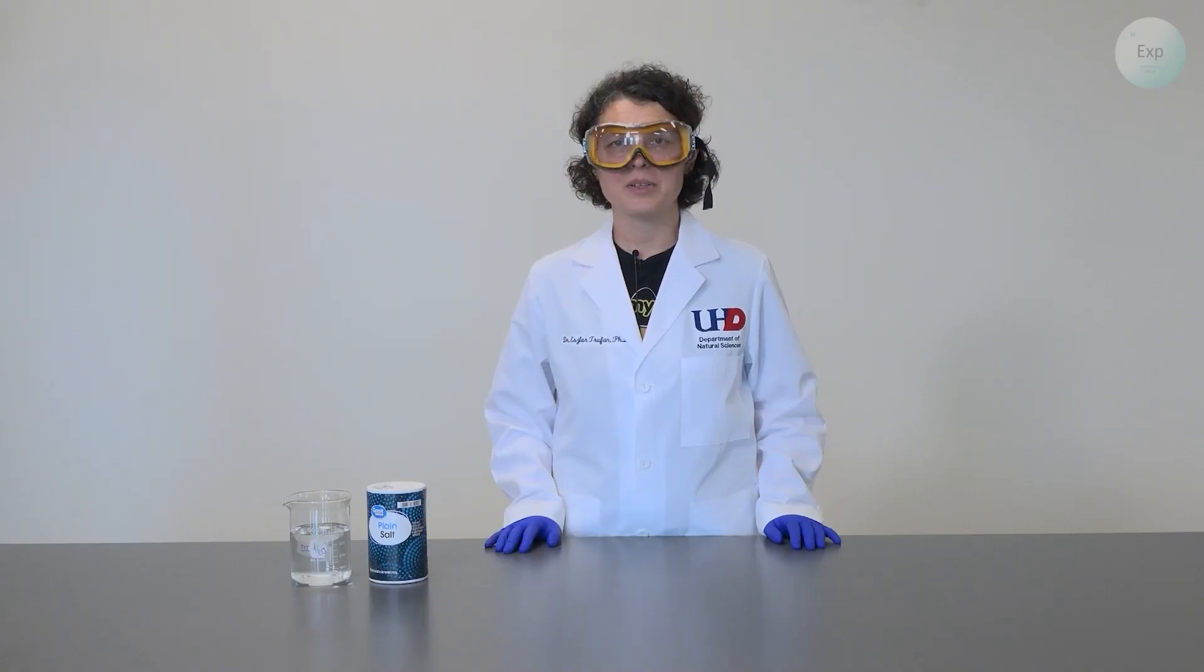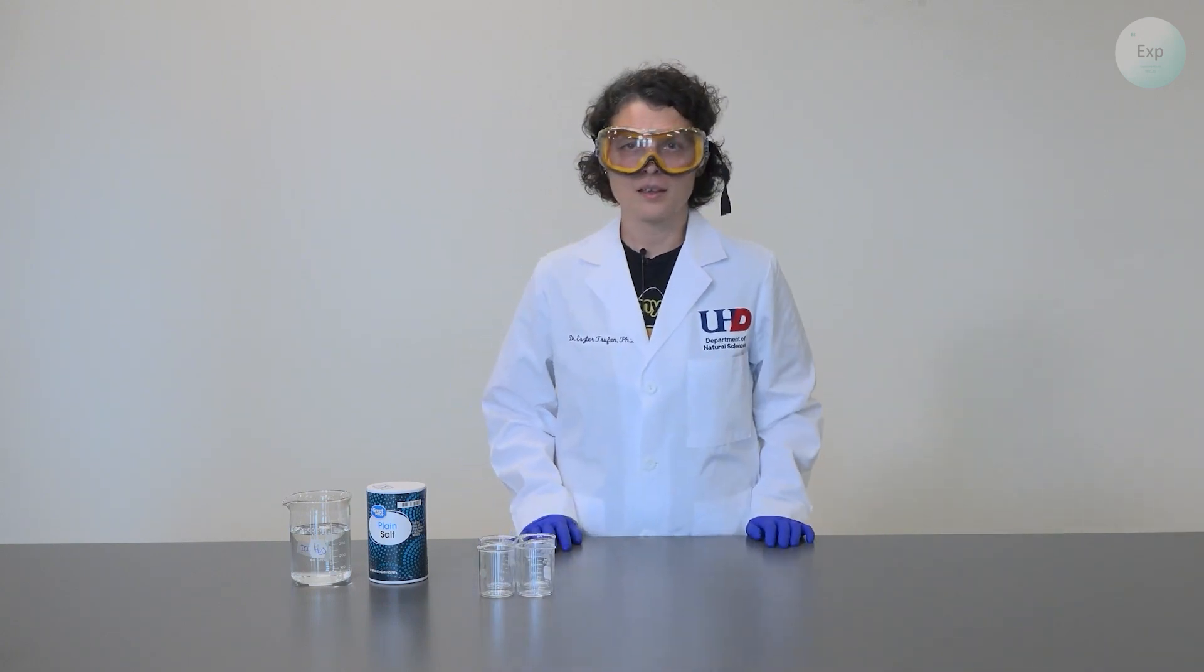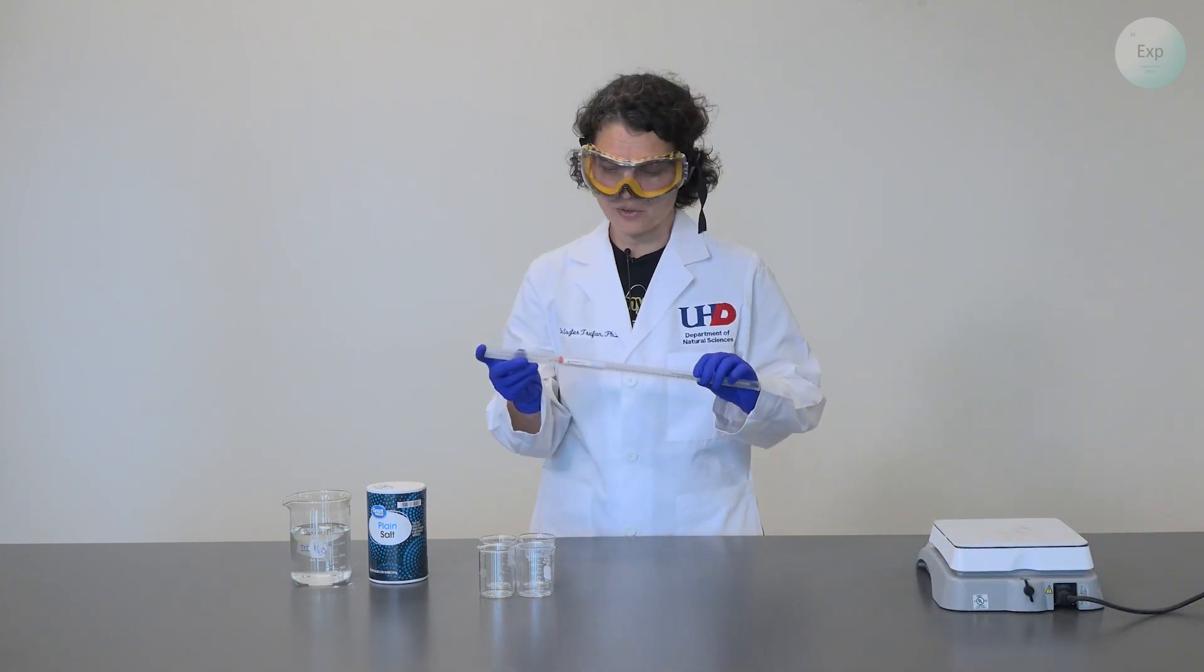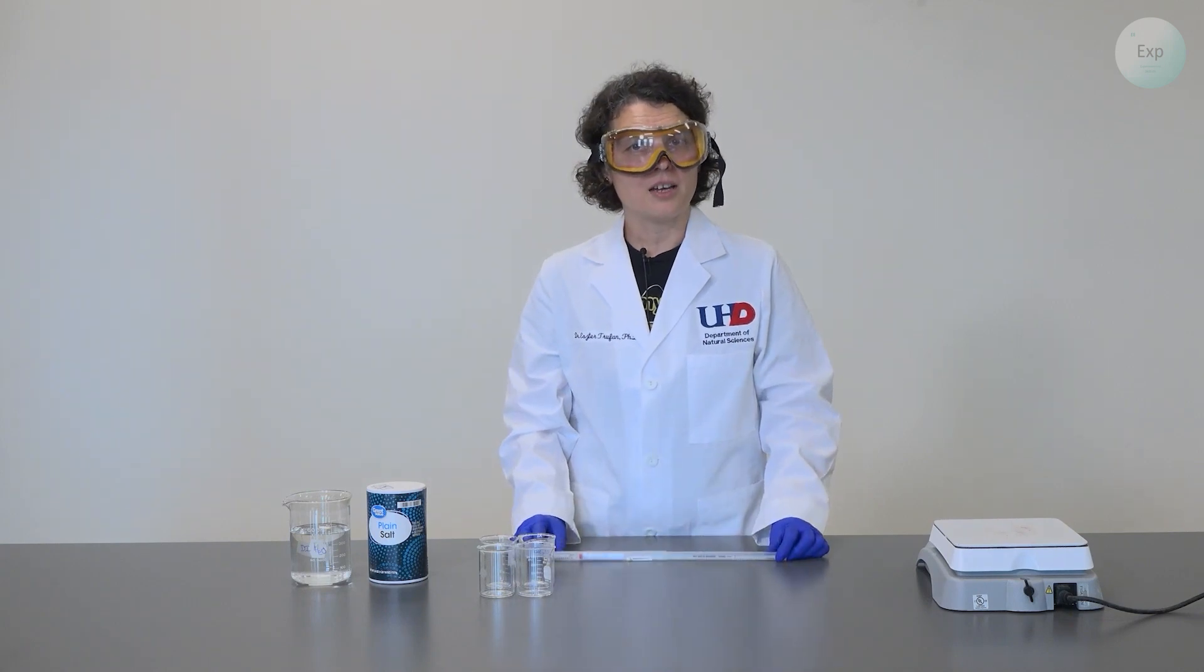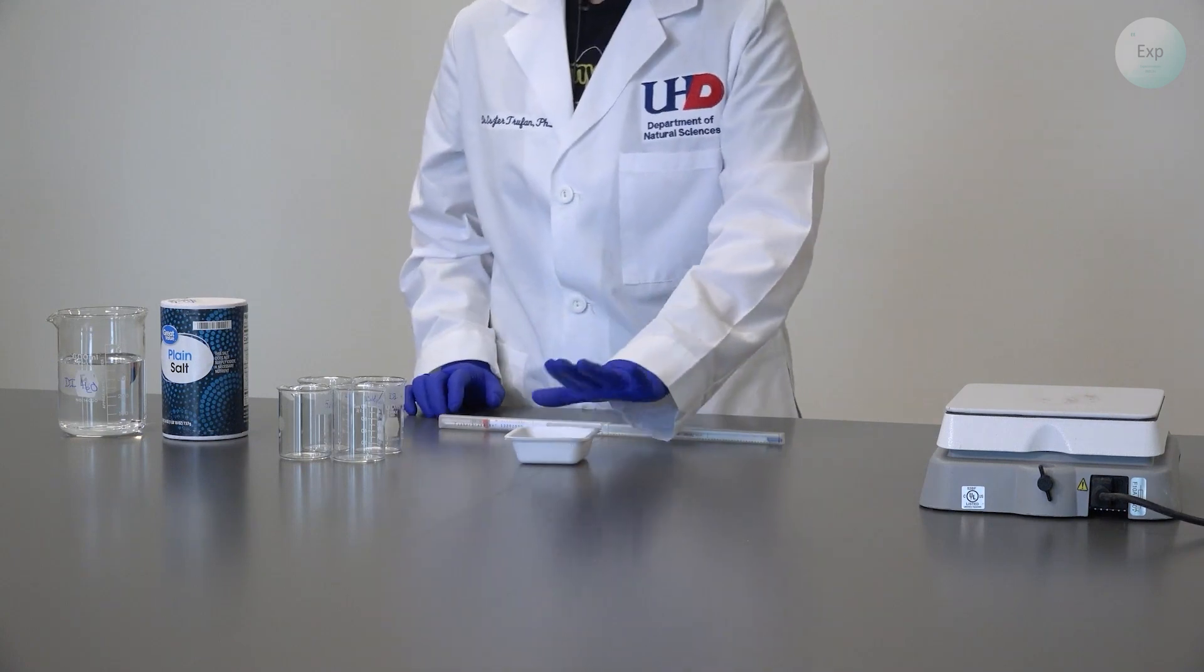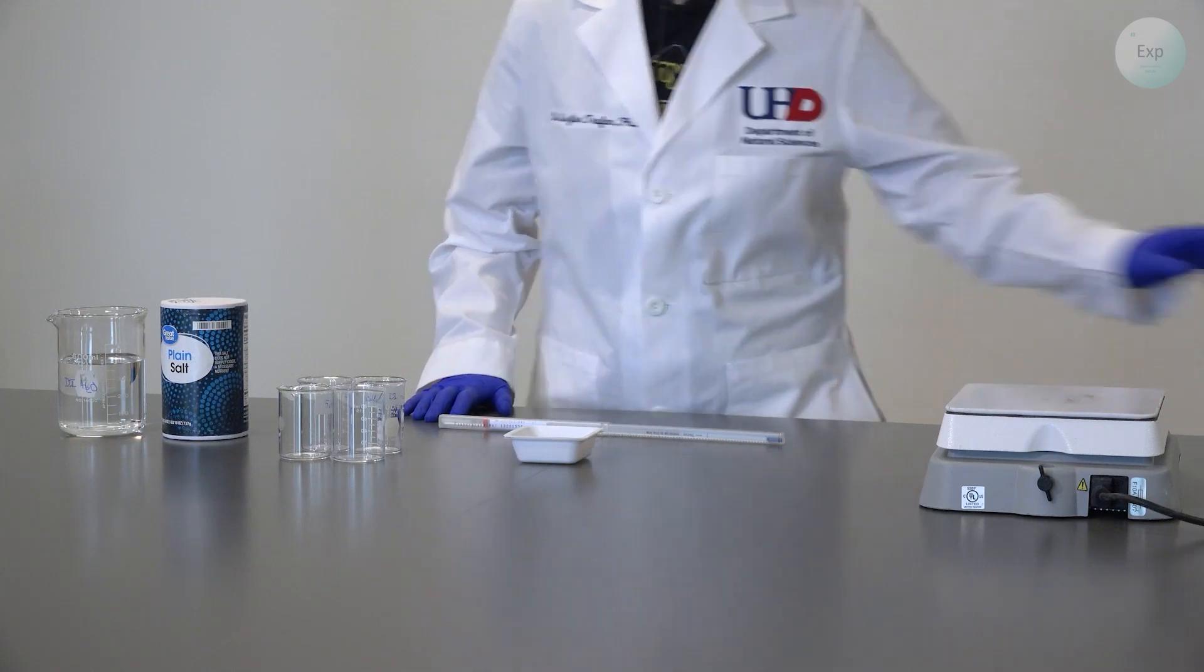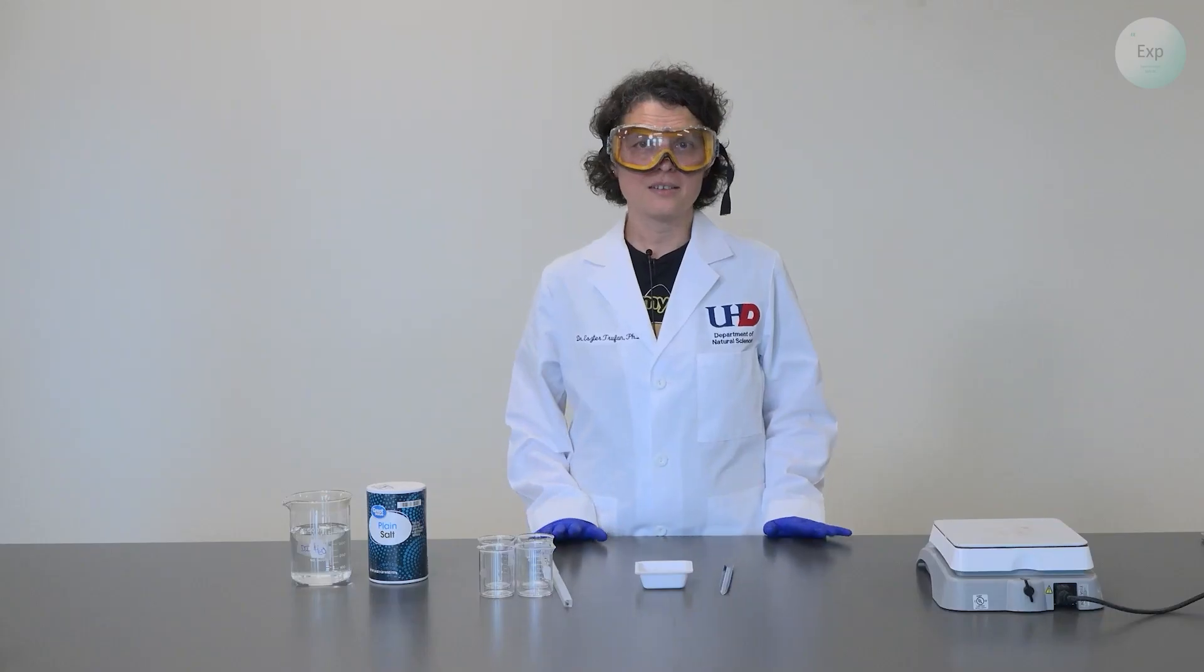On the equipment side, we will need four beakers, a hot plate, a thermometer that is able to go to above 100 degrees Celsius, three weighing boats (though you could use the same one if measuring the same chemical repeatedly), a spatula if needed, and finally, a scale.